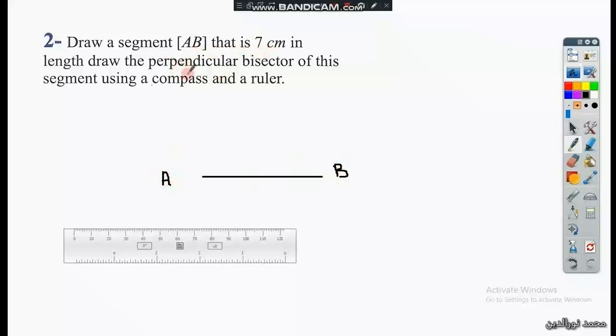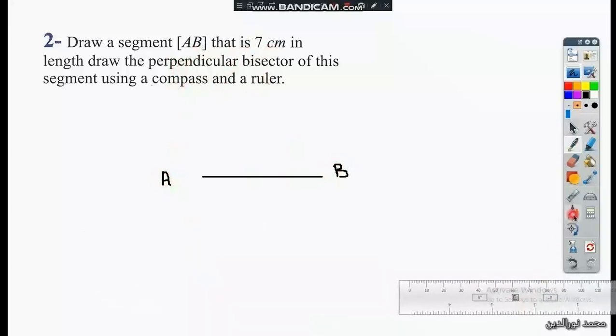And then we have to draw the perpendicular bisector using the compass. So we have to use the compass and place the dry point or the needle of the compass on the vertex or the extremity A, and we will open the compass slightly more than half of the segment, and then we have to draw this arc.